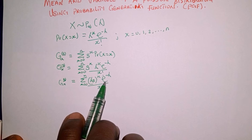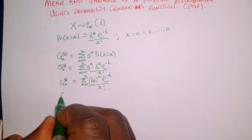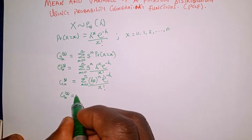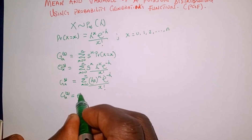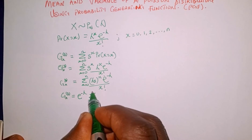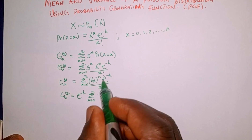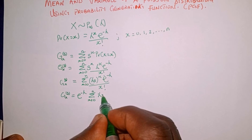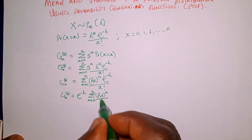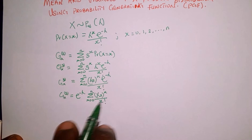The next thing we're going to do is take e raised to the power of minus lambda outside the summation. So we're going to have G sub X of s equal to e raised to the power of minus lambda, times the summation as x raises from 0 to n of lambda s raised to the power of x, all over x factorial.